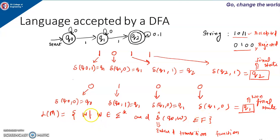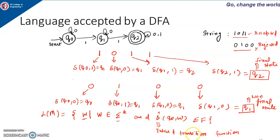The language of the machine is the set of all strings W where W belongs to sigma star. Sigma star gives you the set of all possible strings of all lengths. If applying the extended transition function gives a final state, the string is accepted; otherwise it is rejected and we get a non-final state. So the language is nothing but the set of all valid strings of the machine — a valid string being one that is accepted by the machine.